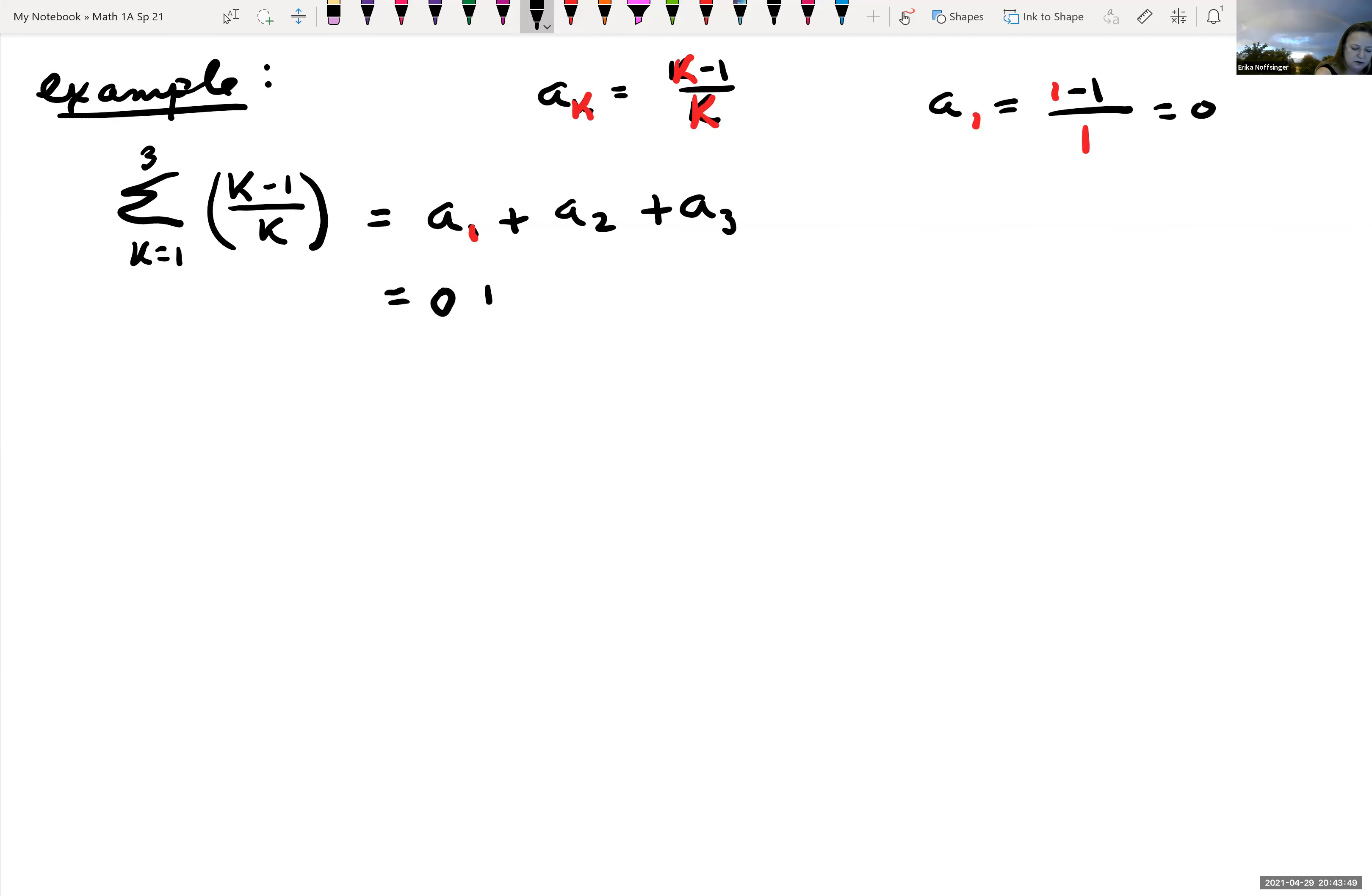So our first term is zero plus a sub two. So we're going to have two over two minus one over two. Well, two minus one is one over two gives us one half. Plus a sub three. So we're going to go in, plug in three wherever we see an x. And so we have, this is three minus one all over three, which is two thirds.